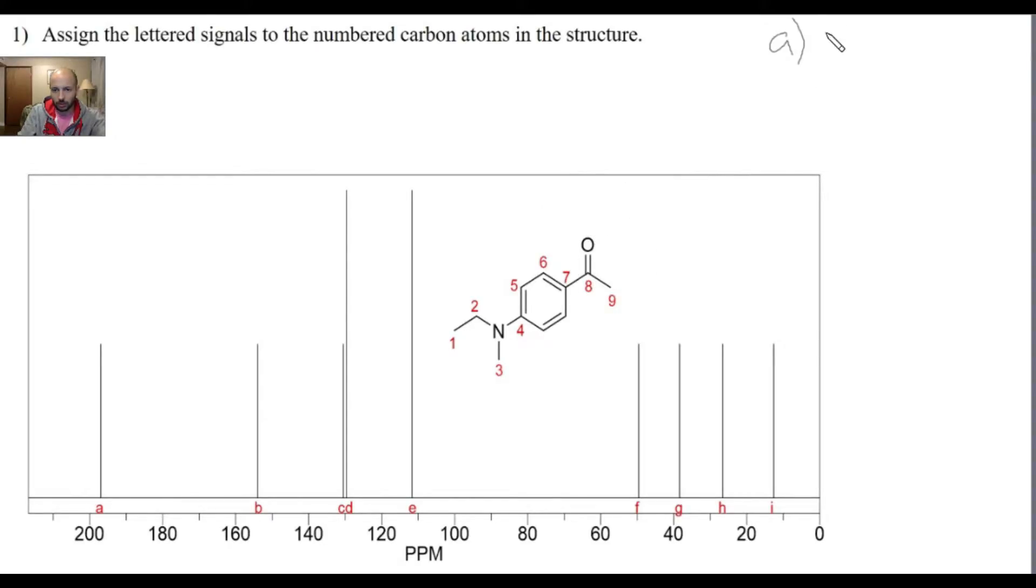So for that reason, I would assign carbon 8 to peak A because it's sitting right next to that electronegative oxygen. Carbon 8 is assigned to peak A, and I think B is going to be a little difficult, so I'm going to start from the other side. I'm going to start from I.